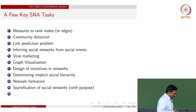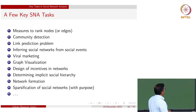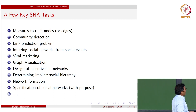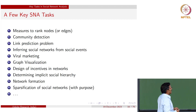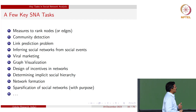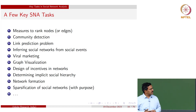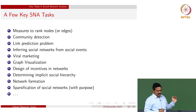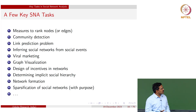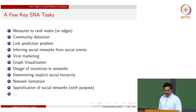Here is a list of representative problems in social network analysis: measures to rank nodes, also called centrality measures or ranking mechanisms; community detection; link prediction; inferring or constructing networks from events; viral marketing; graph visualization; network formation; and sparsification of large networks. These are popular and well-studied problems, though by no means a complete list.